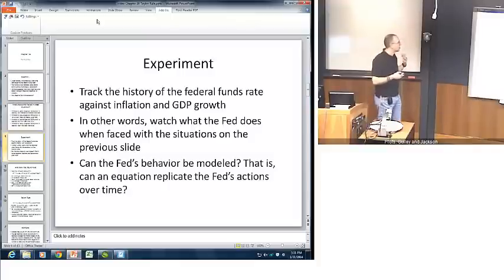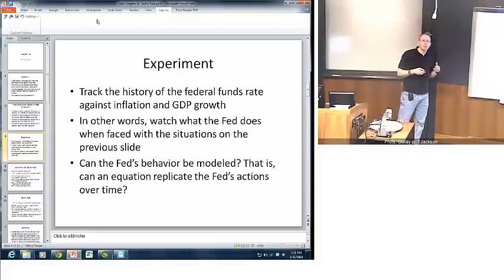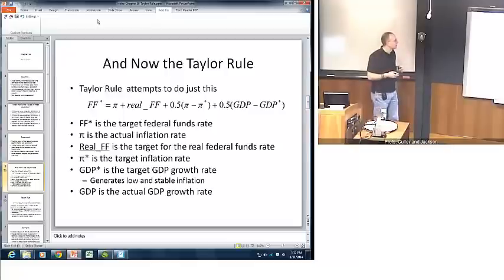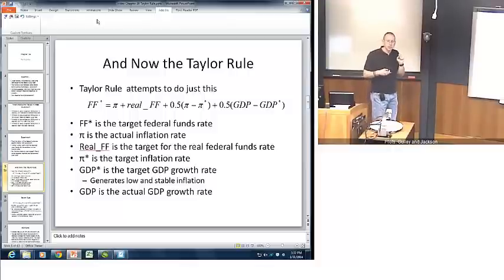We could run a simple experiment. We gather data on inflation, we gather data on GDP growth, and we also gather data on the federal funds rate, and we watch how the federal funds rate tracks inflation and GDP growth over time. What we could observe is what does the Fed do with respect to the federal funds rate when it is confronted with those various scenarios we talked about? Can the Fed's behavior be modeled? Is there an equation that can somehow replicate or mimic the Fed's actions? This is what brings us to what's called the Taylor Rule.